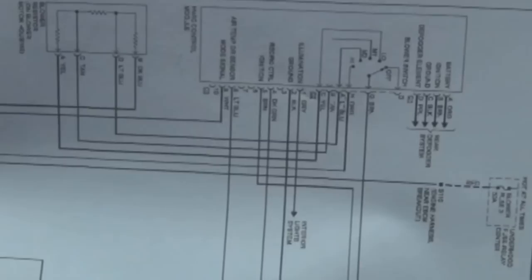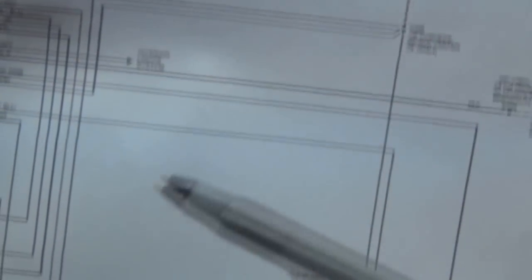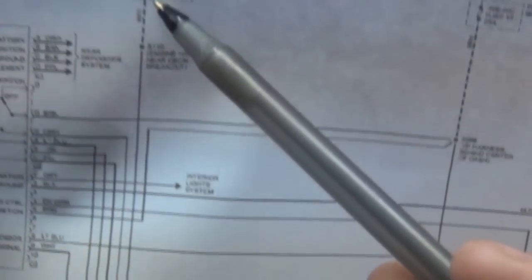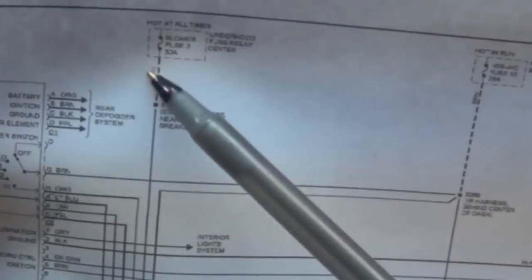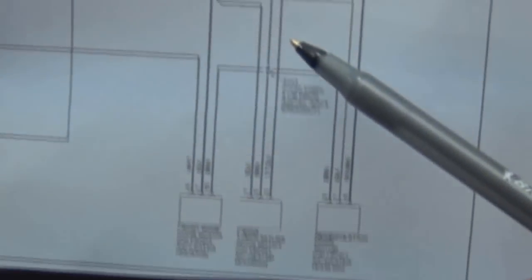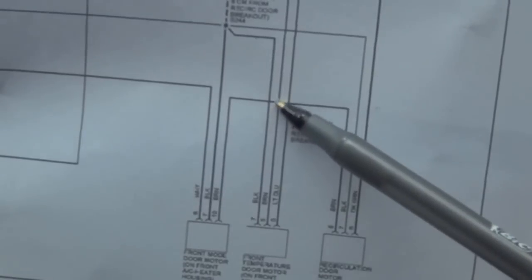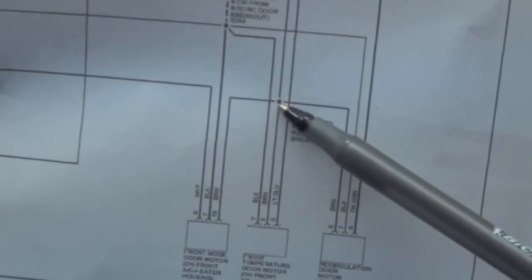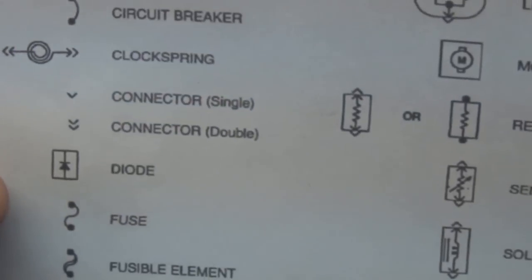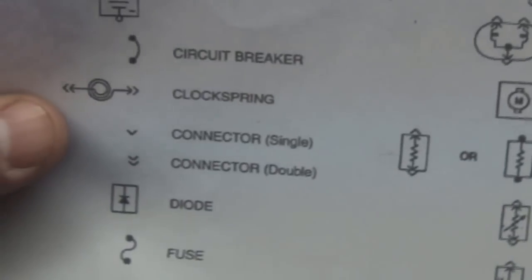Here are some other basics. Right here is a fuse — usually it'll say 'fuse' in there. And right here you'll see a little dot in the middle with four lines — that means a splice; everything there is all connected. If there's a connector in between a circuit, you'll see something like this.